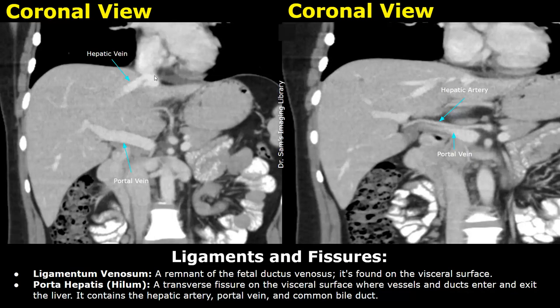This large blood vessel down here is the portal vein, and in this image we can see the hepatic artery near the portal vein. This smaller vessel is the hepatic artery and the larger vessel is the portal vein. Thank you so much for watching — please subscribe and stay tuned for more imaging videos.